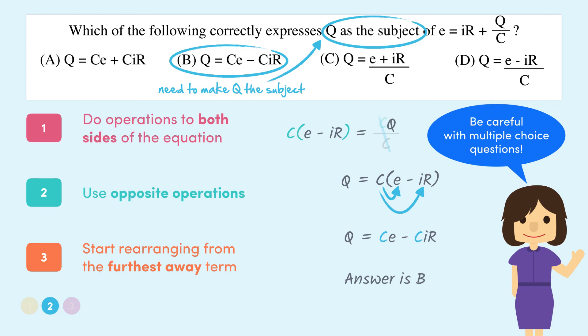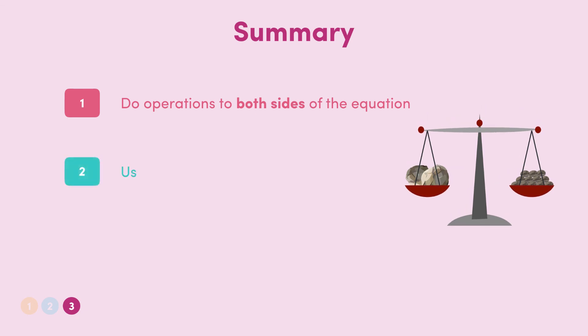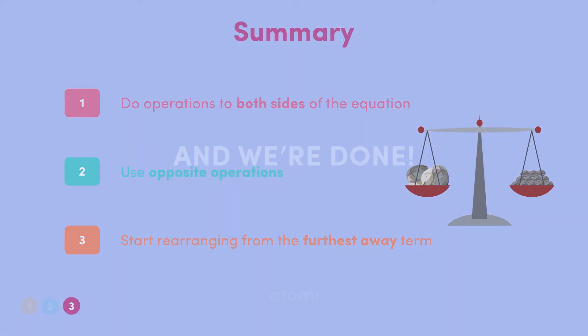So with that in mind, that wraps up our content for the video. Alright, let's have a quick recap of what we covered today. First we looked at rearranging equations and we covered some rules which we need to follow. These included applying operations to both sides, using opposite operations, and looking for the term which is the most furthest away to start simplifying. Then we went through an exam style multiple choice question where we were able to apply these rules. Alright, that brings us to the end of this video so I'll see you next time guys, happy study.